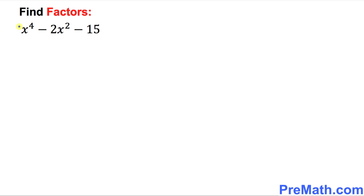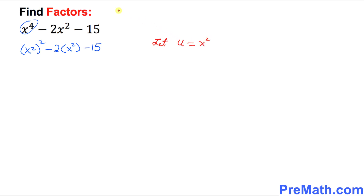The very first thing I want you to manipulate this a little bit. x to the power 4 could be written as x squared, and then squared, and this could be written as minus 2 times x squared minus 15. Now I want to say let u equal to x squared. That means wherever you see x squared, you replace it by u. So this is simply going to become u squared minus 2u minus 15.